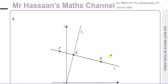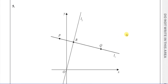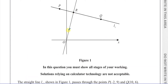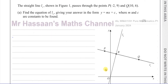Welcome back to Mr. Hassan's Maths channel. This is question number five from the January 2024 Pure Mathematics P1 International A-Level Edexcel exam. This question is about straight line graphs and coordinate geometry. We're given a diagram with two lines L1 and L2. The straight line L1 passes through the points P(-2, 9) and Q(10, 6). We need to find the equation of line L1 in the form y = mx + c, for three marks.